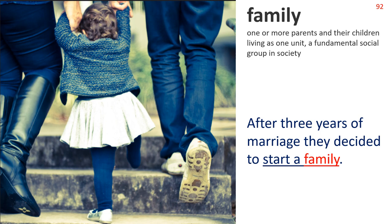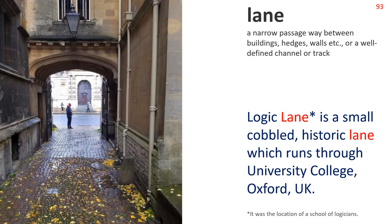Lane — a narrow passageway between buildings, hedges, walls, etc., or a well-defined channel or track. Logic Lane is a small cobbled historic lane which runs through University College, Oxford, UK. It was the location of a school of logicians.